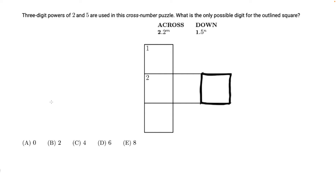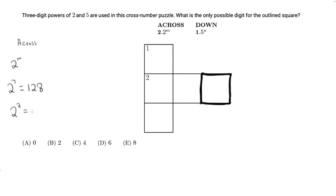For the three-digit powers of 2, we can list them up over here. For the across, we have 2 to the m power. The first power of 2 with a three-digit number is 2 to the 7th, where m is 7, and 2 to the 7th is 128. The next power of 2 with three digits is 2 to the 8th, and that's 256.